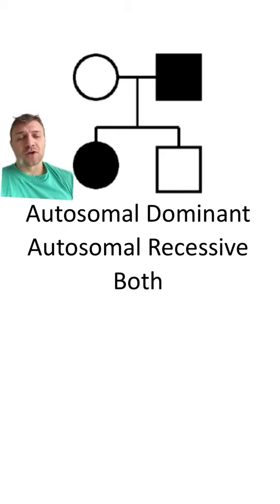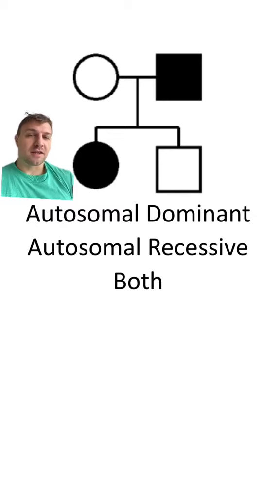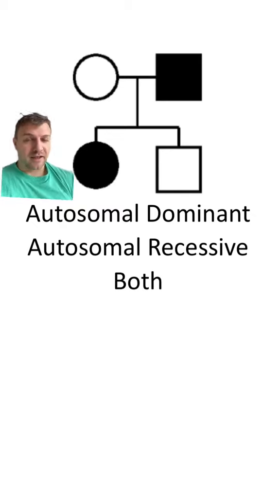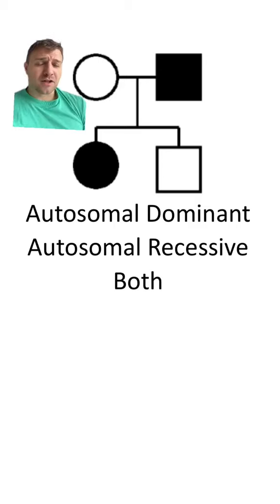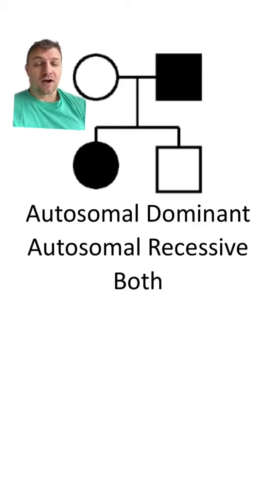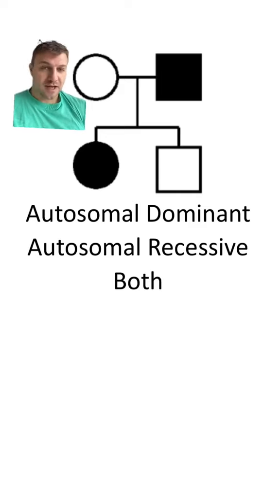This could also show an autosomal recessive inheritance pattern, since the daughter and the father both would be little a little a, while the mother could be a heterozygous genotype and pass the little a on to her daughter and the big A on to her son.